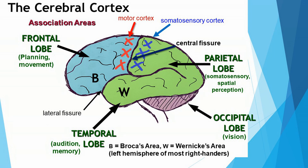In contrast, damage to Wernicke's area, another of the speech centers, is more serious. I've drawn a W in the temporal lobe of this individual's brain, showing you Wernicke's area. If there's damage to Wernicke's area, then the individual is no longer able to comprehend speech. They may produce sounds that seem fluent, but they're not actually meaningful. And when I ask someone who has damage to Wernicke's area to please put this book on the table, they would not be able to comprehend what I'm saying.